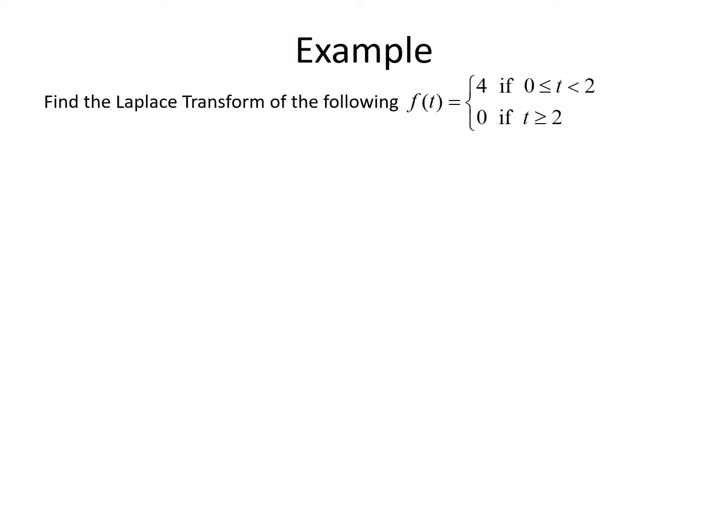For our next example we deal with a piecewise function. We want to find the Laplace transform of f of t defined as 4 when 0 is less than or equal to t less than 2, and 0 when t is greater than or equal to 2. With a piecewise function we split the range of integration into two integrals: the first from 0 to 2 and the second from 2 to infinity, plugging each piece into the definition. The Laplace transform is the integral from 0 to 2 of e to the negative st times 4, plus the integral from 2 to infinity of e to the negative st times 0 dt.